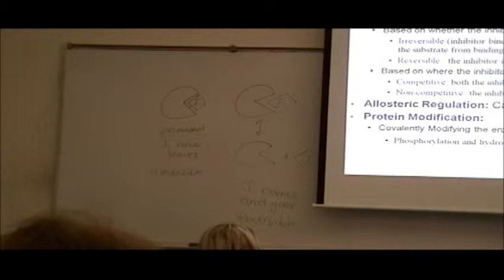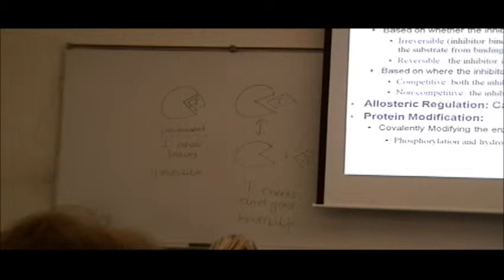When we start talking about inhibitors, there are now three separate molecules playing a role: the enzyme is molecule one, the substrate is molecule two, and the inhibitor is a third, separate molecule. Three distinct players in this game.